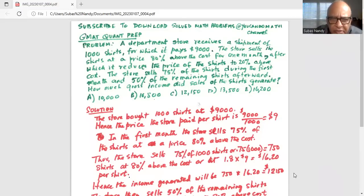The store sells 75% of the shirts during the first month and 50% of the remaining shirts afterward. How much gross income did the sales of the shirts generate? Okay, gross income.